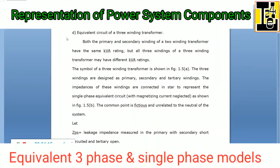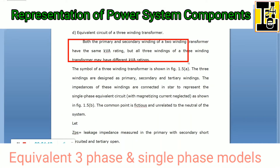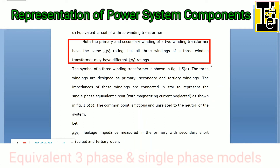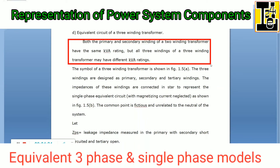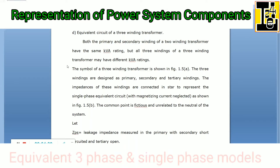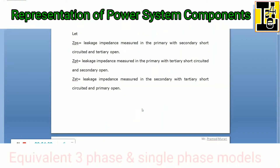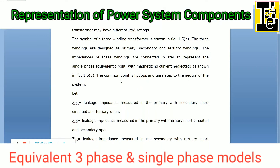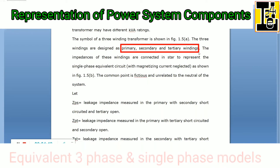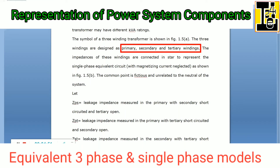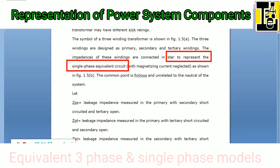Both the primary and secondary windings of a two-winding transformer have the same kVA rating, but all three windings of a three-winding transformer may have different kVA ratings. The symbol of a three-winding transformer is shown here as a symbolic representation. The three windings are designated as primary, secondary, and tertiary windings.